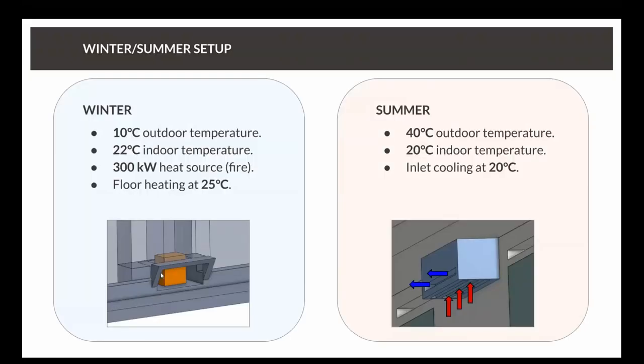We have a couple of different setups. On the left-hand side we have our winter setup, with a fire — represented as an orange block heat source. We have quite a low outdoor temperature — thinking about England, 10 degrees is feasible. Here in Munich it can get to minus 20. The idea is to have around a 20-degree indoor temperature. We also have some underfloor heating, which we can turn on or off. The beauty of simulation is we could turn the fire on or off, run the underfloor heating at different power outputs, and understand how much power we need to get the room to a comfortable level — which helps you design your system.